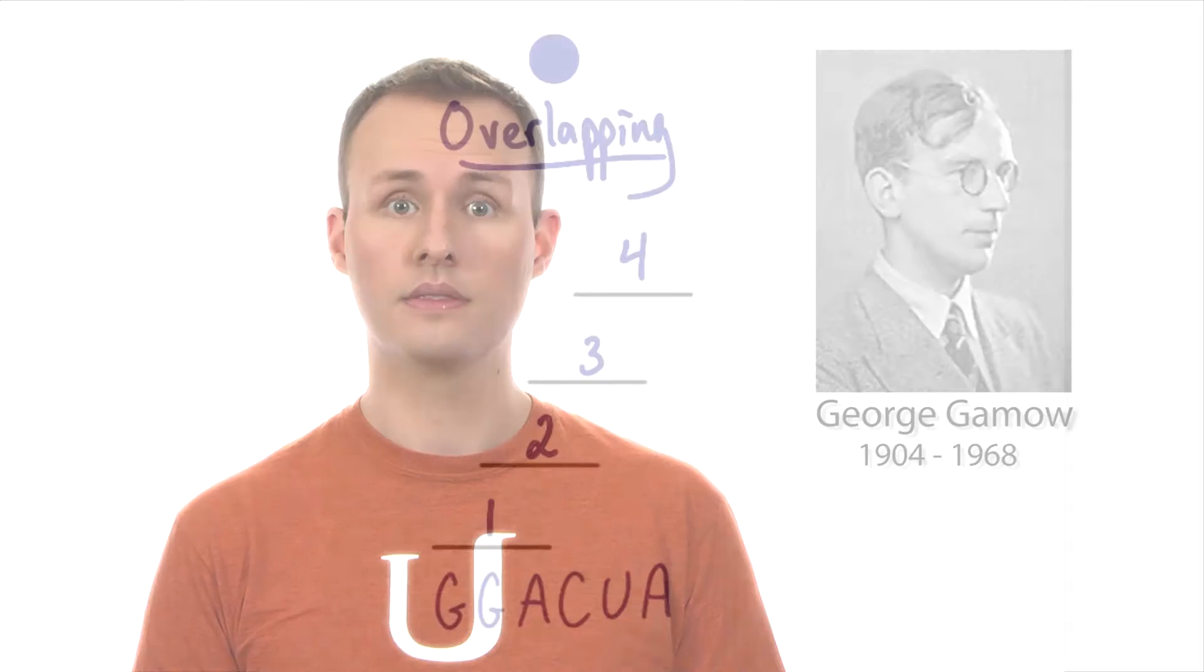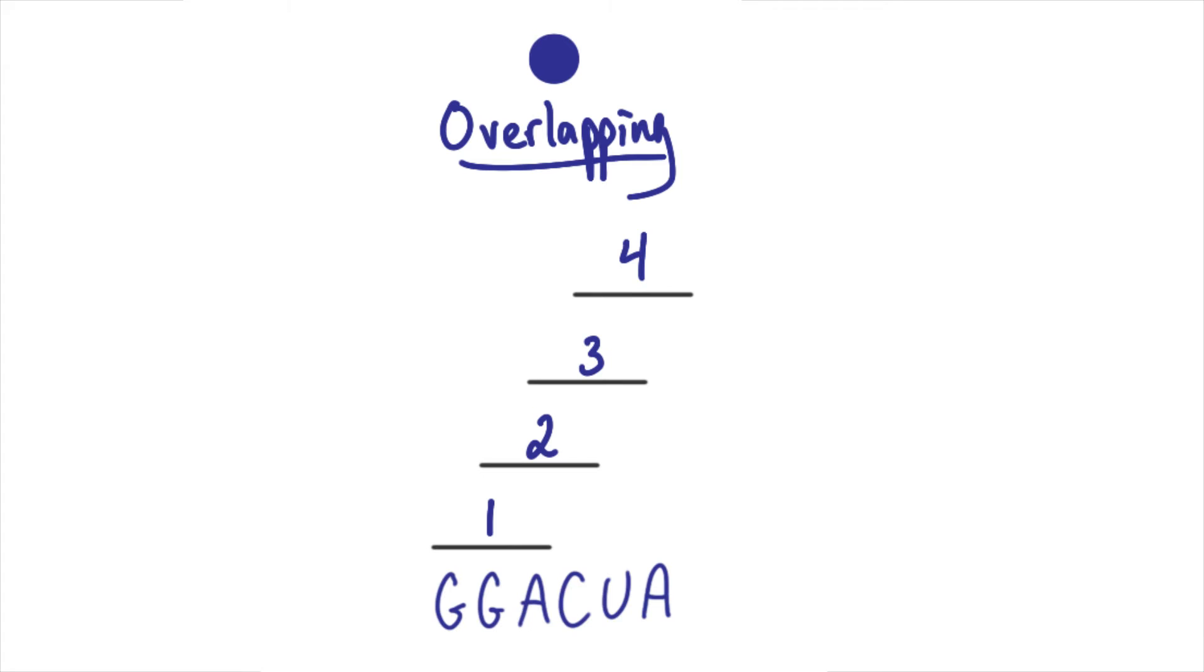In other words, Gamow favored a model where a sequence of letters in RNA would be read in sets of three, but after reading the first triplet, the second triplet began with the second letter of the first triplet, and so on.